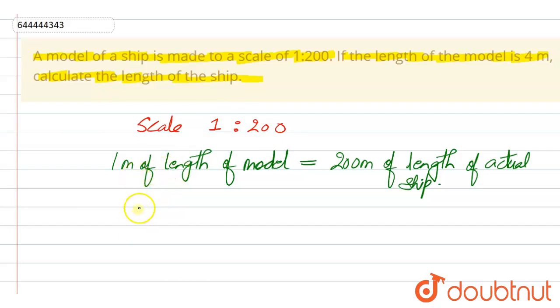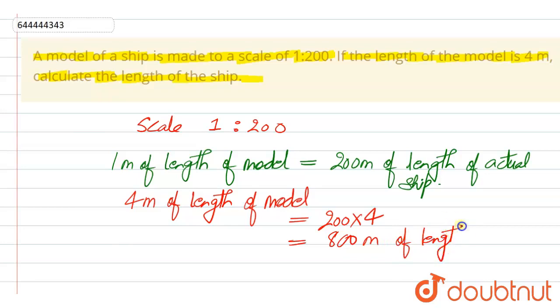So, 4 meter of length of model would be equal to 200 into 4, that is equal to 800 meter of actual length of ship. So, this is the actual length of ship.